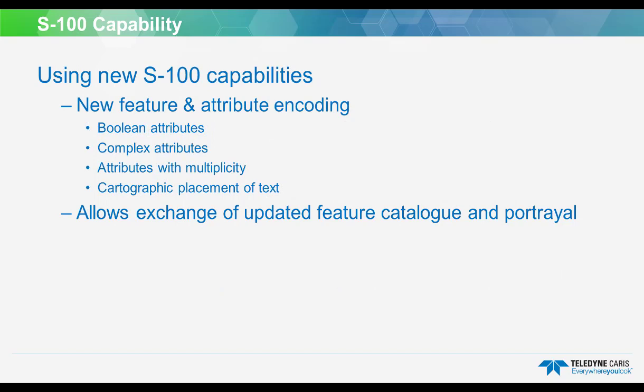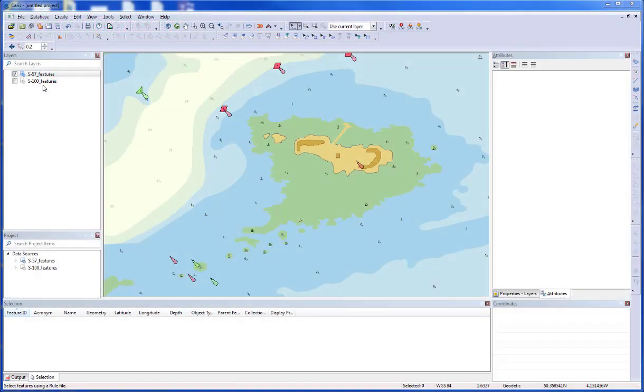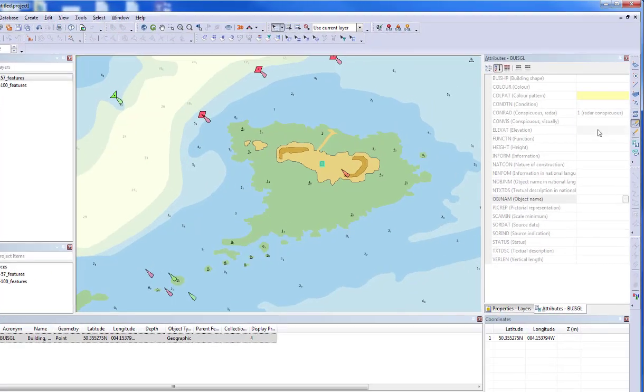A new simple attribute type, Boolean, has been introduced, allowing users to set an attribute to either true or false. This new attribute type is a logical replacement for certain S57 enumerated list attributes, including the S57 attribute Conrad or Radar Conspicuous.